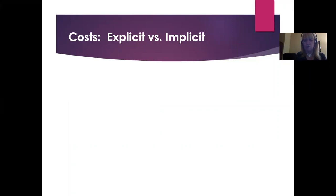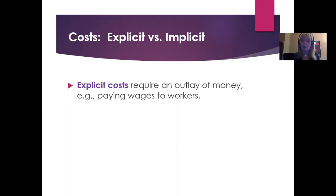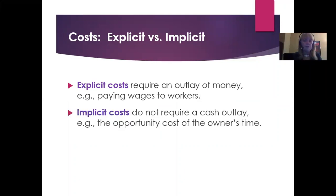Costs come in two very distinct categories: explicit costs and implicit costs. Explicit costs require an outlay of money — these are the things that you would have to write a check for. They include paying wages to your workers, paying your rent, paying your utilities, paying suppliers for your raw materials — everything that you have to pay for directly. These are all explicit costs. In accounting, these are the costs.